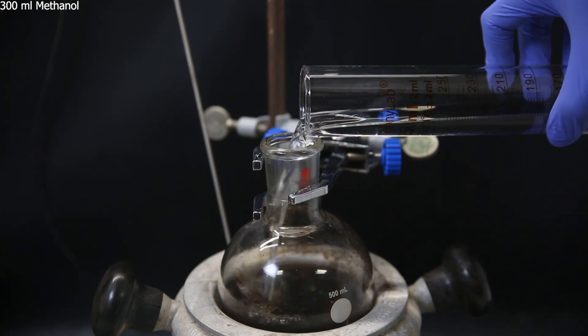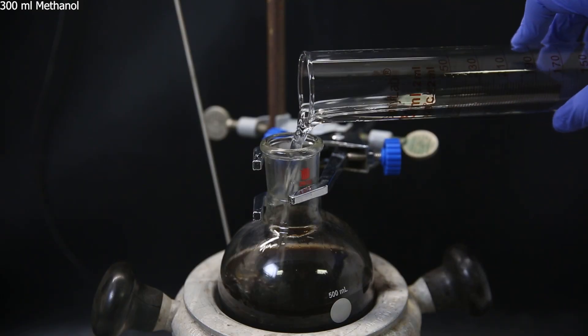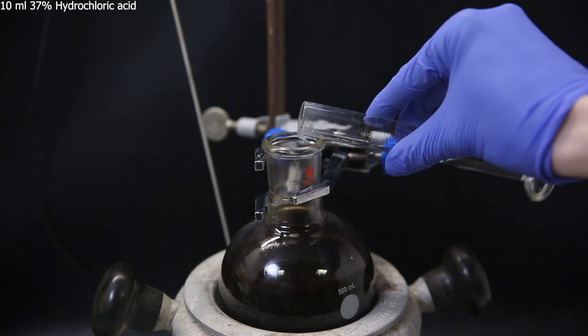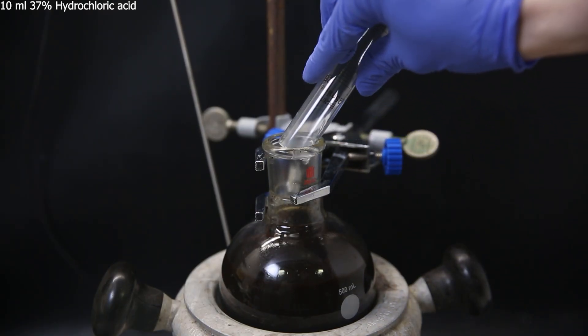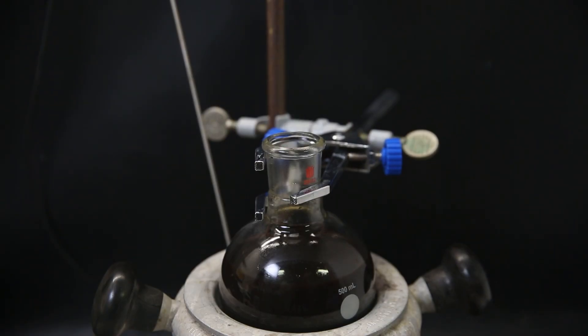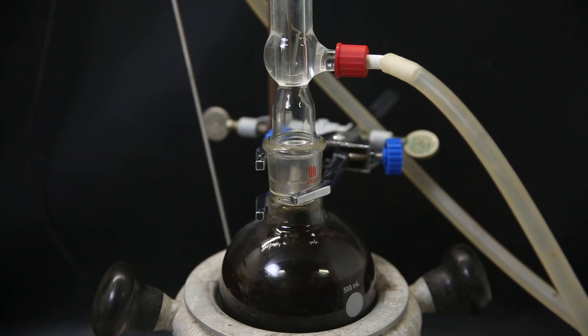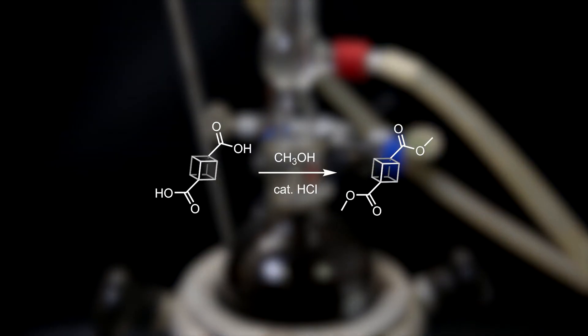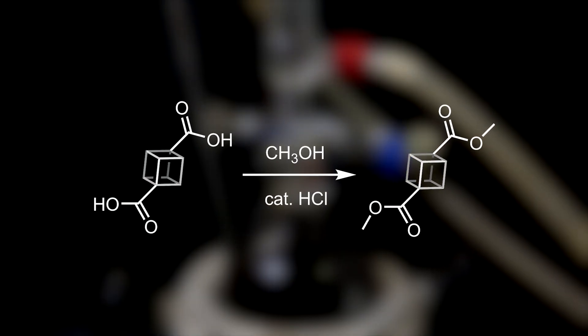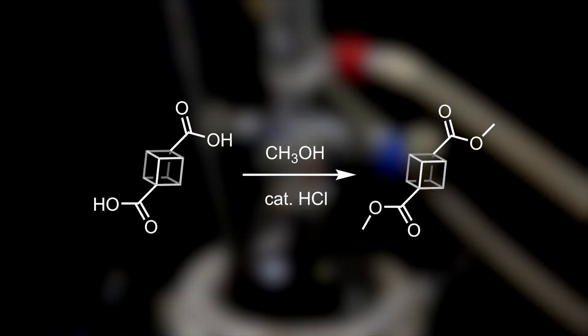Then for the next reaction, I add in 300 ml of methanol as a solvent and reagent, and then 10 ml of 37% hydrochloric acid as the catalyst. I attach a reflux condenser and leave it to reflux overnight. In the reaction, cubane dicarboxylic acid undergoes a typical Fischer esterification with methanol, where hydrochloric acid serves as the catalyst to produce dimethyl-1,4-cubane-dicarboxylate.